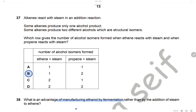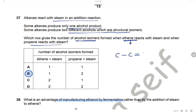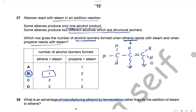Question 37: Alkenes react with steam in an addition reaction. When ethene reacts with steam, only one alcohol product forms — ethanol. When propene reacts with steam, the OH group can be added to either the first or second carbon, giving propan-1-ol or propan-2-ol — two structural isomers. So: one isomer for ethene + steam, and two isomers for propene + steam. The answer is B.